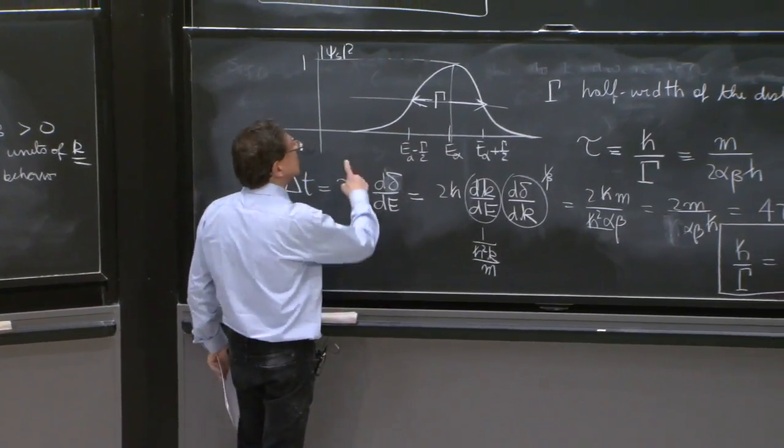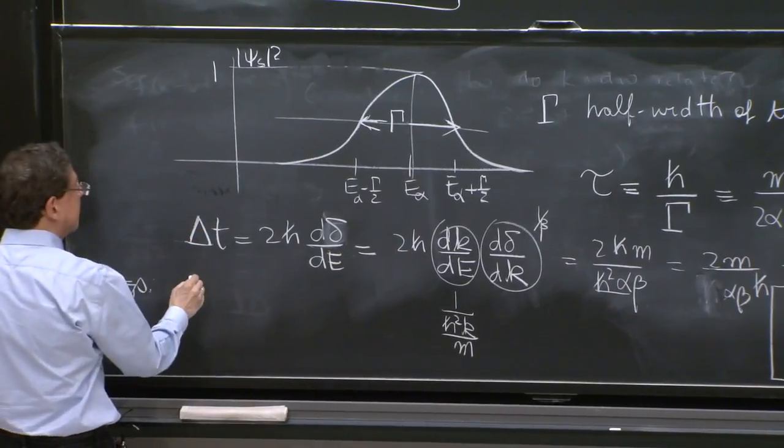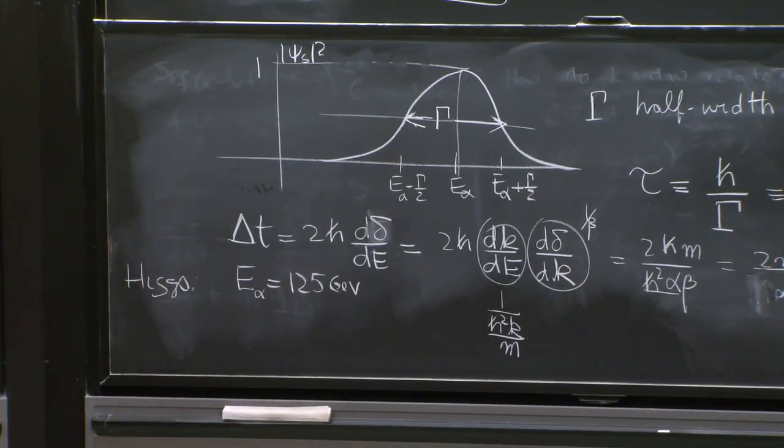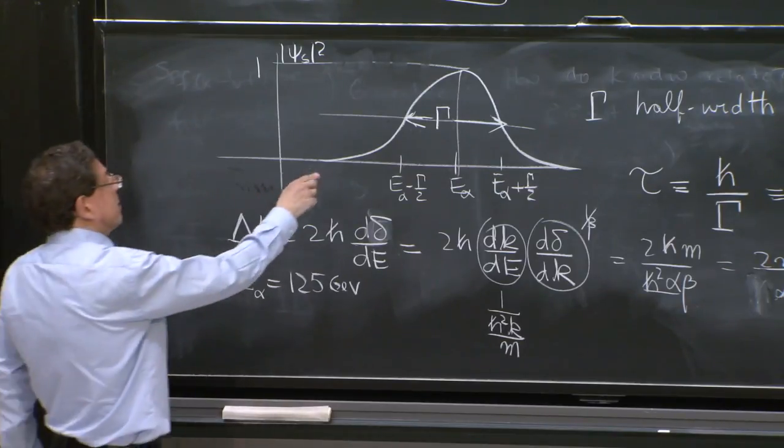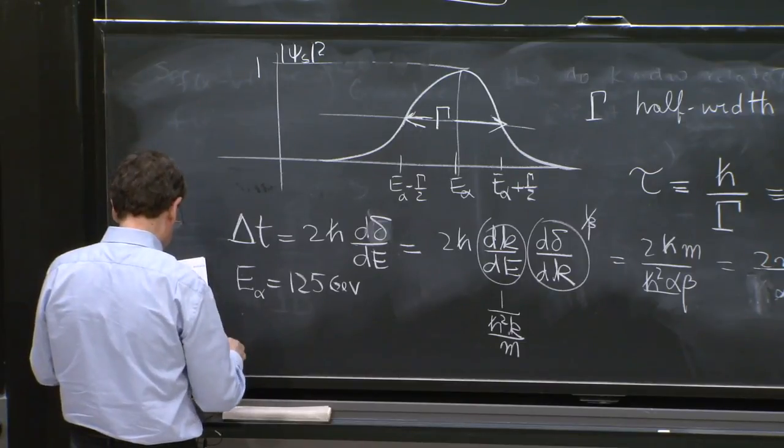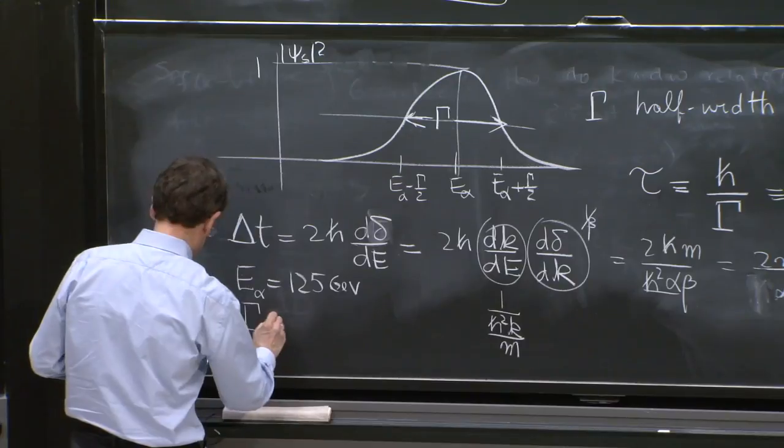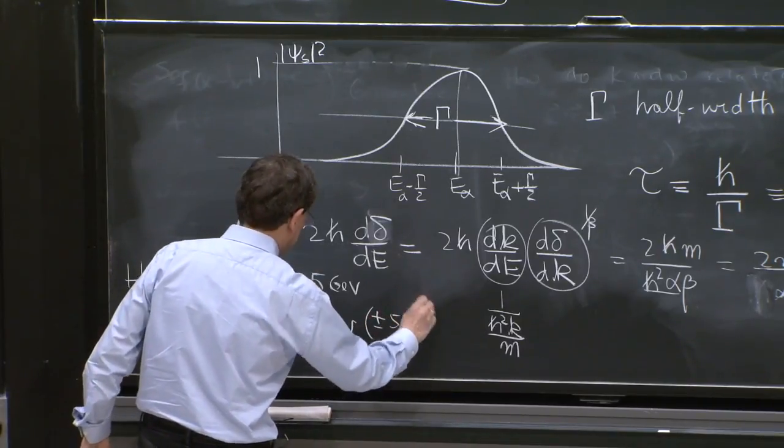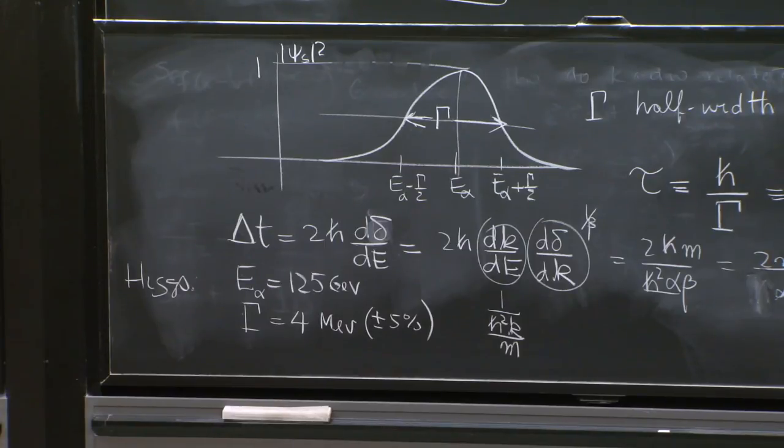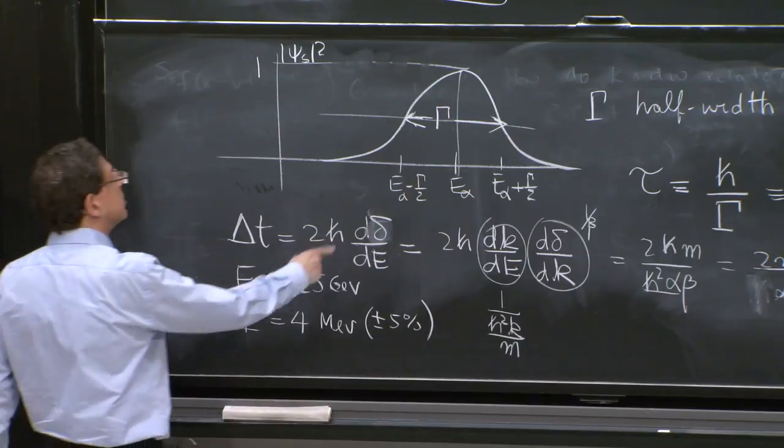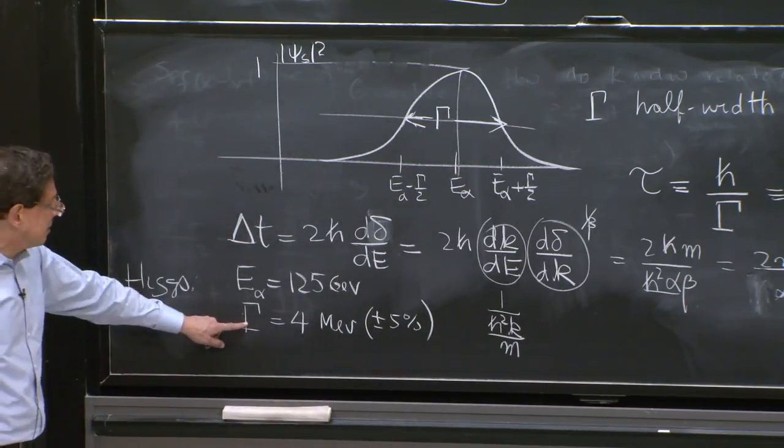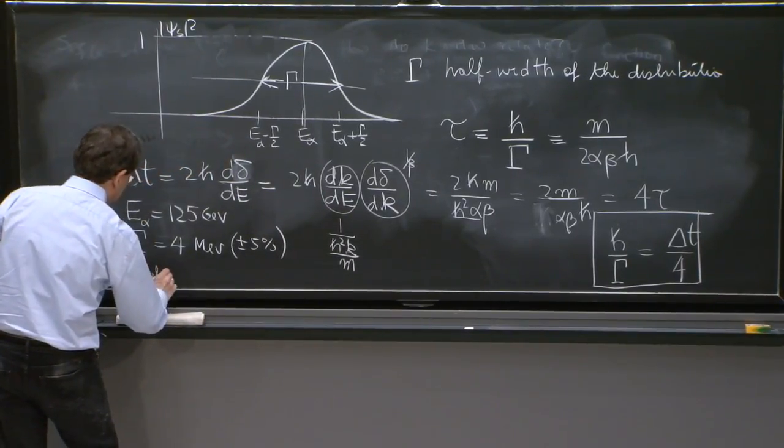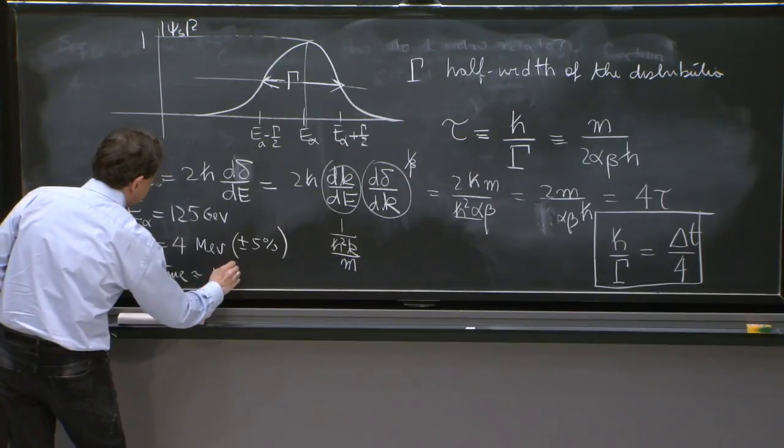the center energy of the resonance is observed in scattering amplitudes at a center energy E_alpha of 125 GeV. And the width is very small. In fact, the width is about gamma. It's about 4 MeV, plus minus 5%. 4 MeV is very little, because an MeV is 1,000th of a GeV. So it's a very narrow resonance. And from this gamma, you can get a time. And the time is lifetime. It's about 10 to the minus 22 seconds.